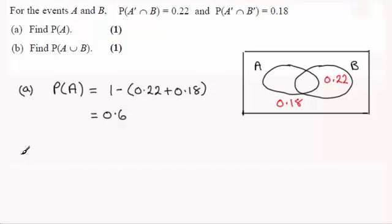Now for part B here, we've got to work out the probability of A union B. Everything that's in A or B or both.